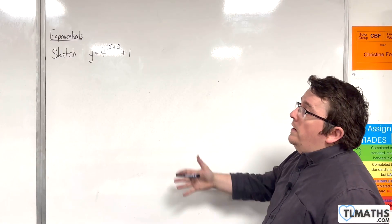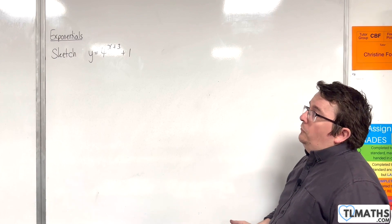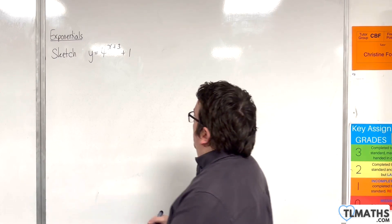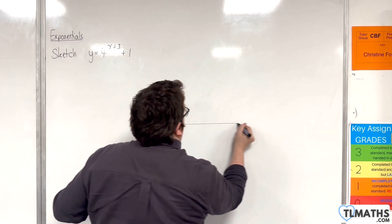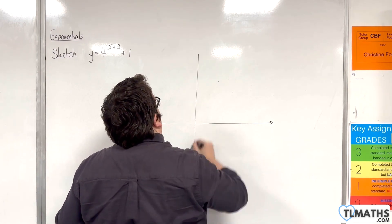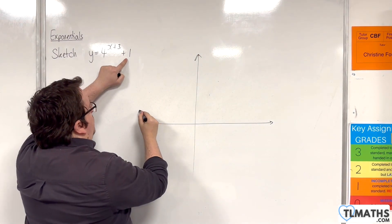So in this video I want to sketch y equals 4 to the x plus 3 plus 1. So the first thing to do is to draw on our horizontal asymptote, which will be when y is equal to 1.